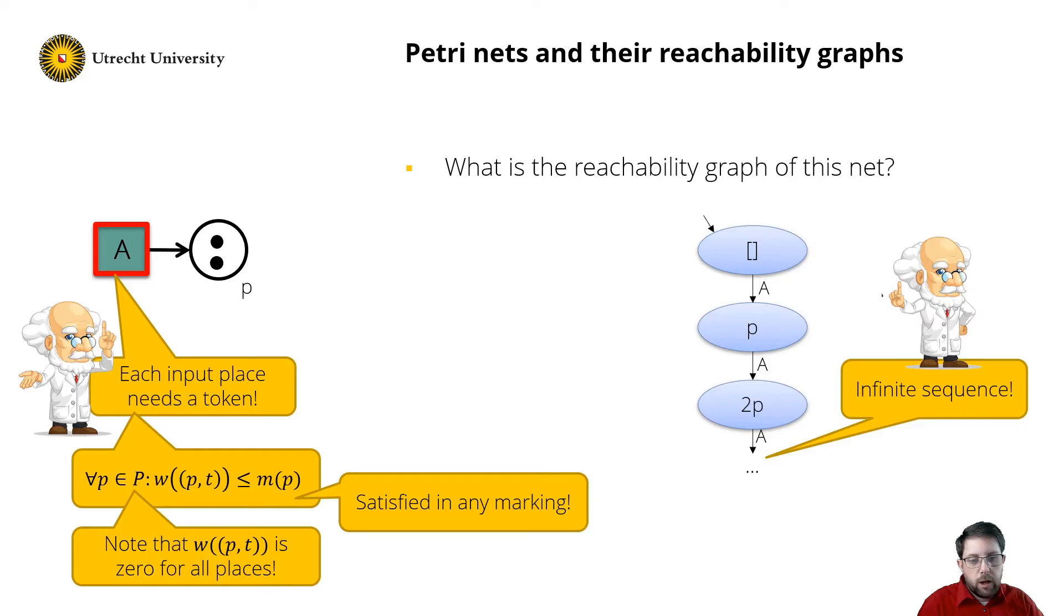And even worse, I need an infinite number of states to model this. Therefore, we say that Petri nets are more powerful than labeled transition systems. Hence, we need to be very careful in modeling.